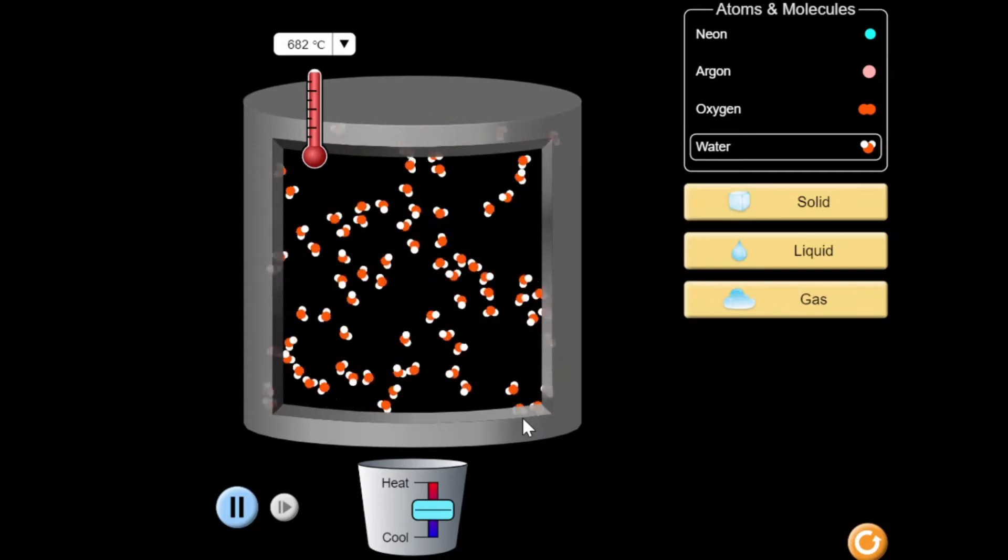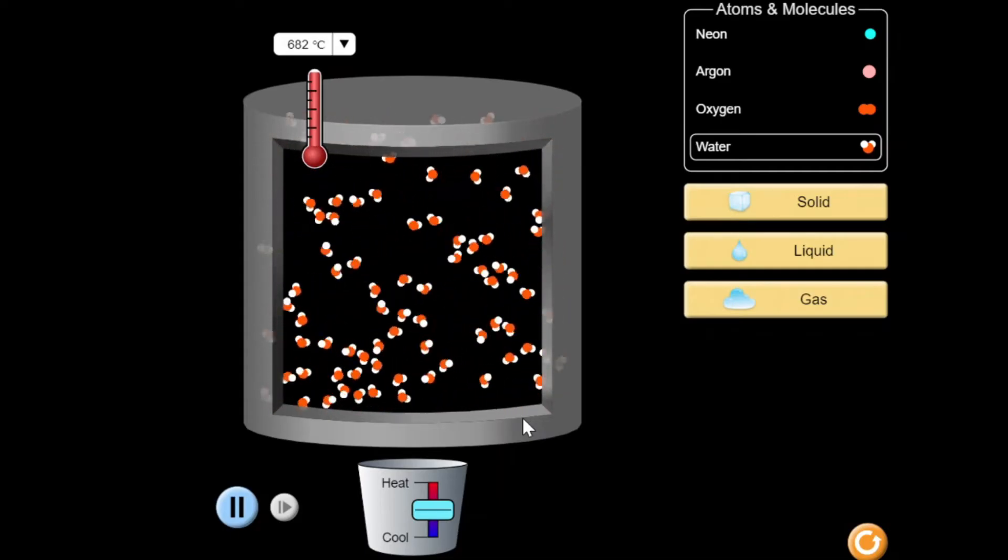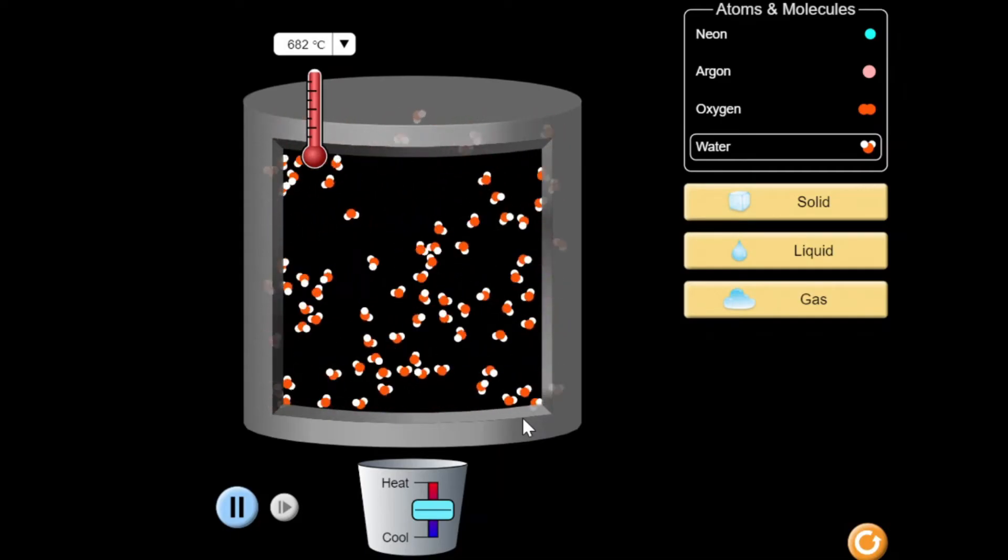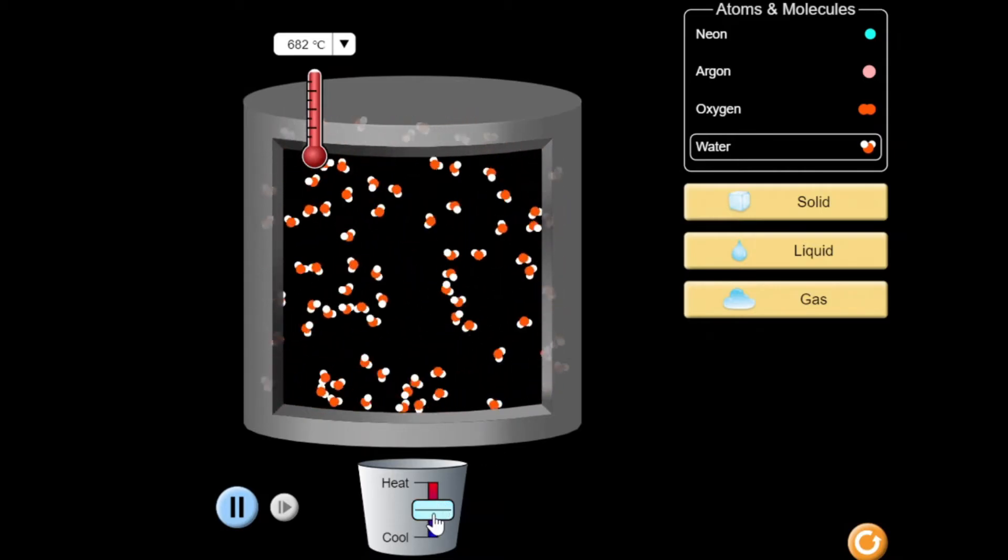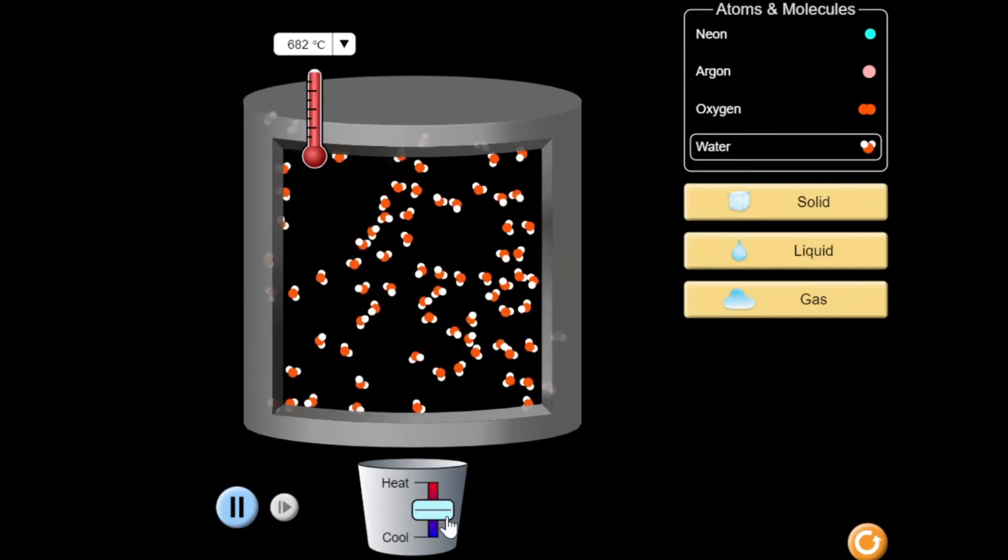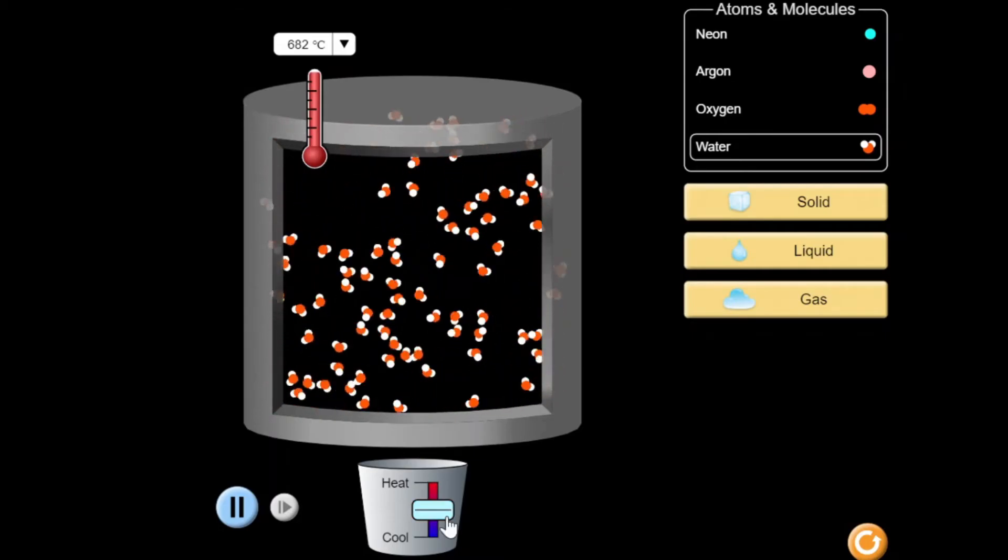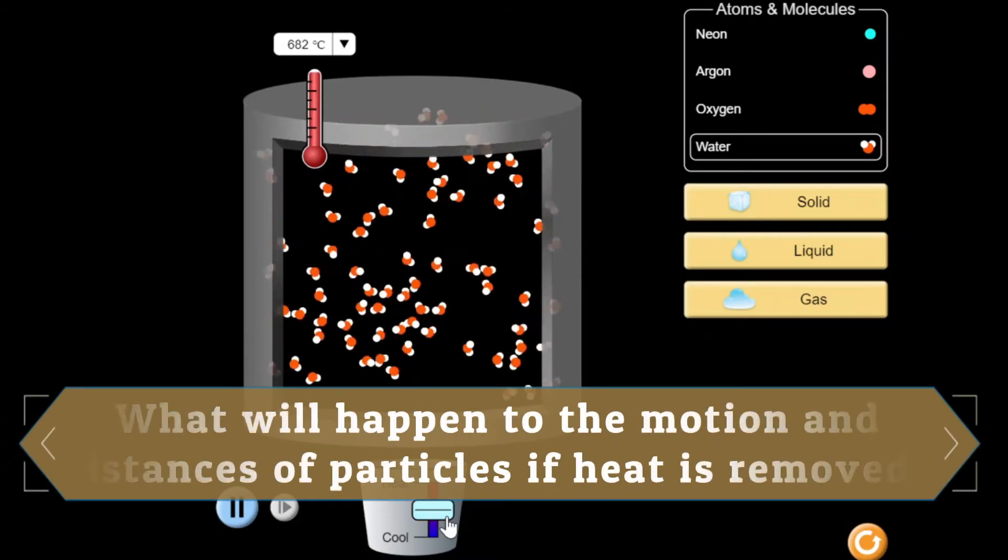Now at this point, let us see what will happen if we lower the temperature or if we remove heat in the container. We'll do that by moving this lever downward. But before we do that, make first your predictions on what will happen if we lower the temperature.